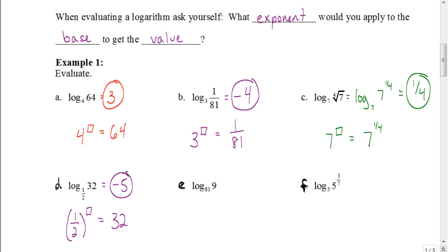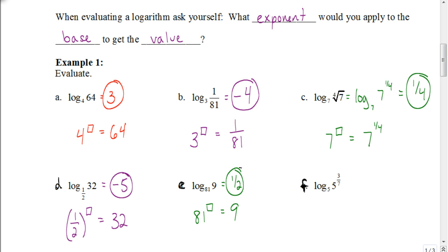The next one: what exponent would I apply to 81 to get 9? Normally exponents go from a smaller number to a larger one, but here we go from a larger number to a smaller one. If you take the square root of 81 you get 9, and the square root is the same as raising to the 1/2 power. So 81 to the 1/2 power gives us 9, meaning the answer is 1/2. And for the last one, log base 5 of 5 to the 3/7 power — you can see right away the answer is just 3/7.